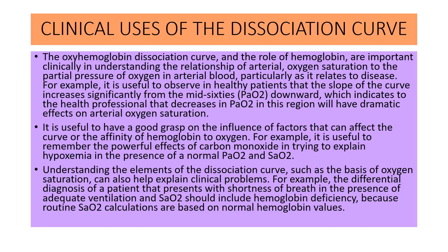Understanding the elements of the dissociation curve, such as the basis of oxygen saturation, can also help explain clinical problems. For example, the differential diagnosis of patients presenting with shortness of breath in the presence of adequate ventilation and oxygen saturation should include hemoglobin deficiency, because routine oxygen saturation calculations are based on normal hemoglobin values. This concludes the topic of the oxyhemoglobin dissociation curve. Thank you.